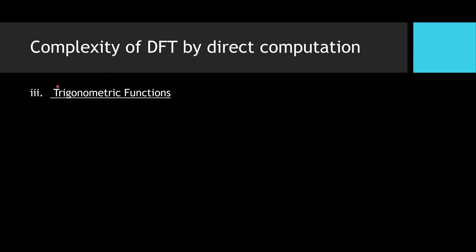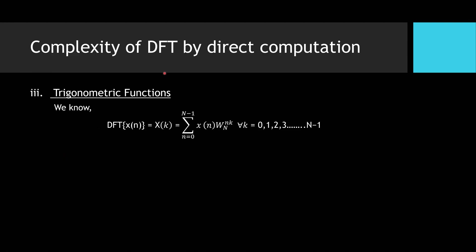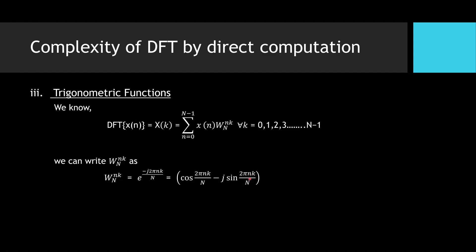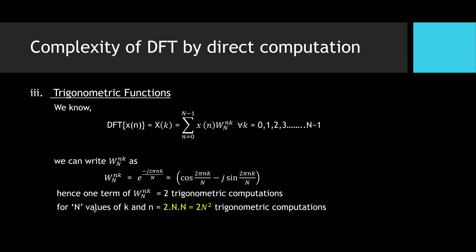Now we will compute how many trigonometric functions are involved. The twiddle factor W_N^(NK) can be written as cos(2πNk/N) minus j·sin(2πNk/N). So for one twiddle factor term there are two trigonometric computations. For N values of K and N values of N, we have 2×N×N, that is 2N squared trigonometric computations.